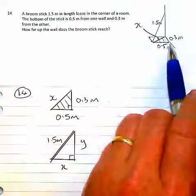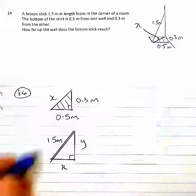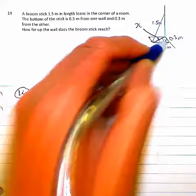So I've marked them at 0.5 meters there, 0.3 meters there, shaded in the base. And even though it may not look like it, that's a right angle.